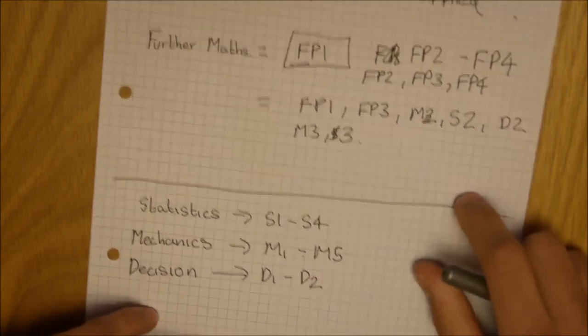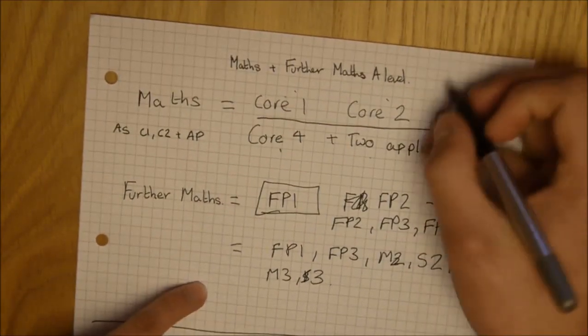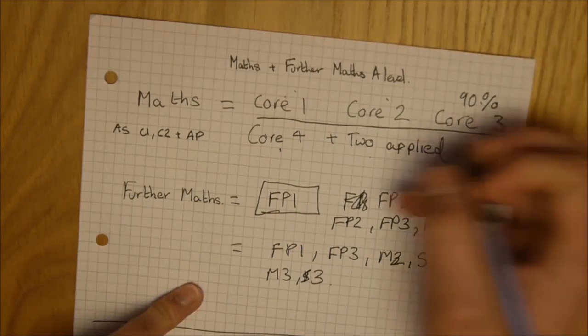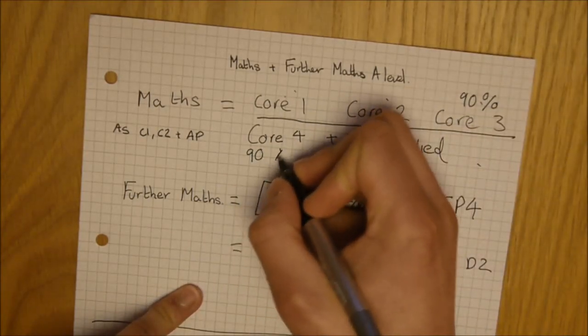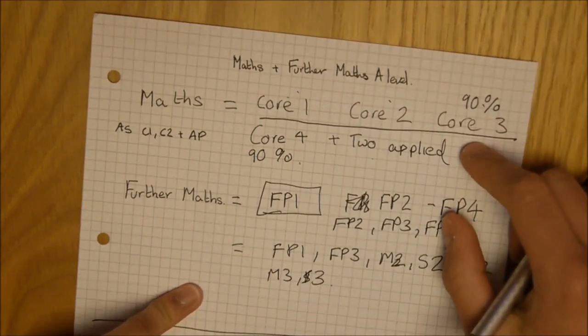Right then, just a quick breakdown of grades. In maths, as you can see, you must get 90% or higher in Core 3 and 90% or higher in Core 4 to get an A-star. That's the only thing.